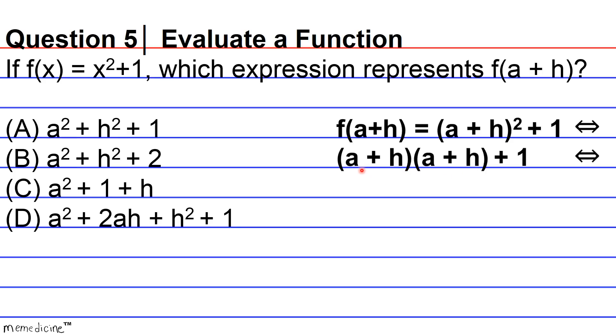So, if we multiply the first terms, this gives rise to A squared. Now, we have to add the products of the outside terms. That's A plus H. Now, we're going to have to add the product of the inside terms. That's another A plus H. And last, we're going to have to add the product of the last term. This gives rise to H squared.